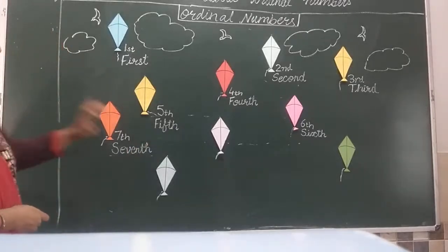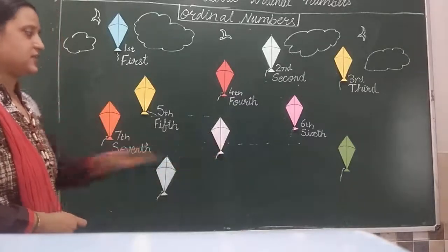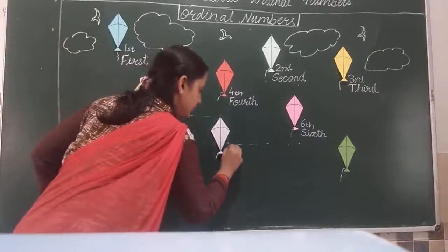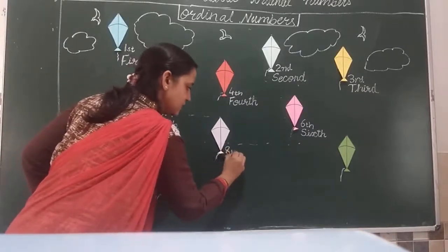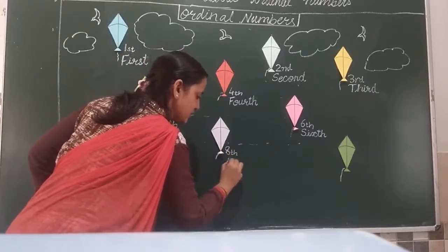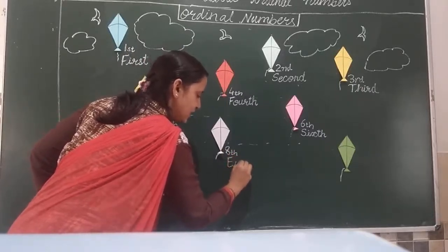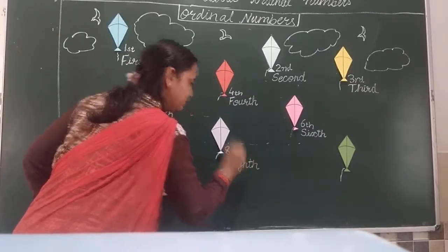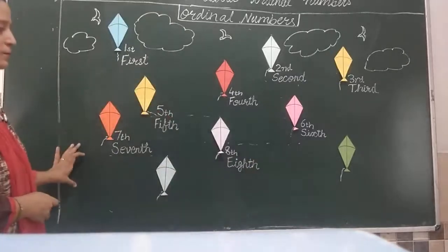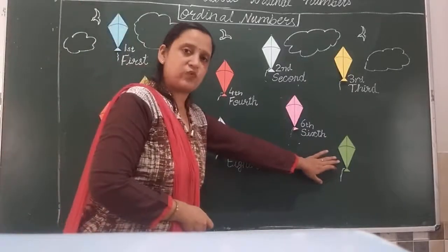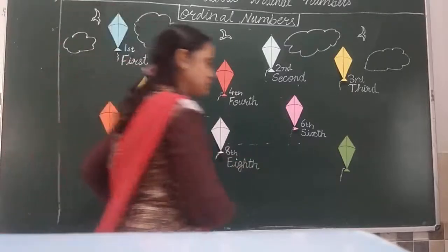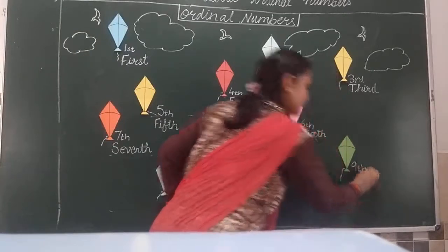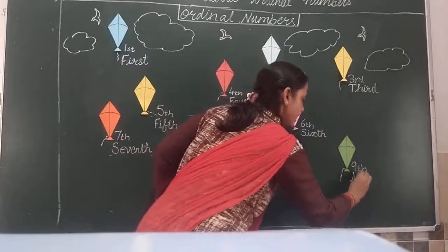Then this white kite — it is at the 8th position. 8 with 'th'. E-I-G-H-T-H. 8th. Then this green kite is at the 9th position. 9th. N-I-N-T-H. 9th.